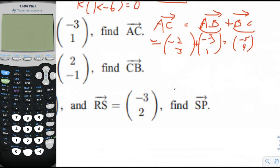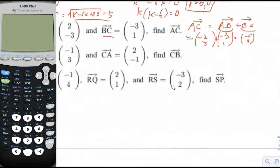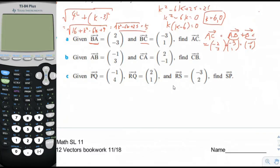Next one, find CB. So CB is equal to CA plus AB. That would be 2, negative 1, plus AB would be negative 1, 3. So that would be equal to 1, 2.